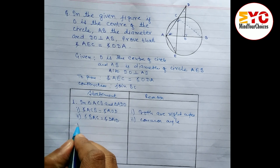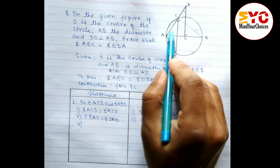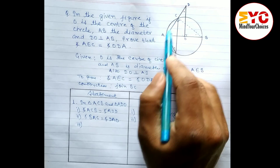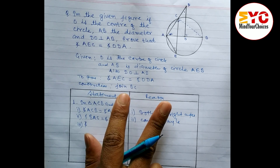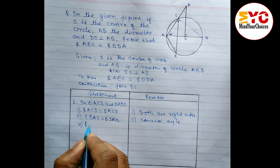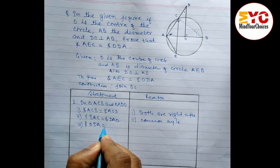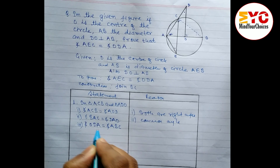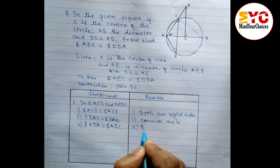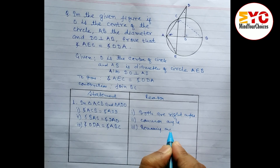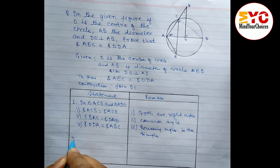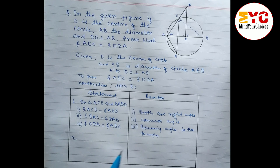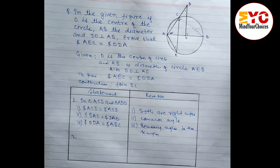If two angles in a triangle are equal, then the third angle is itself equal. The remaining angles are angle ODA in triangle ADO and angle ABC in triangle ACB. So we write: angle ODA equals angle ABC, and the reason is the remaining angles in the triangles are equal since two angles are equal.